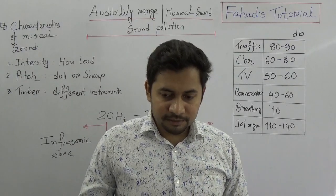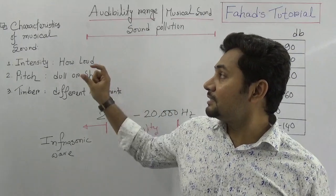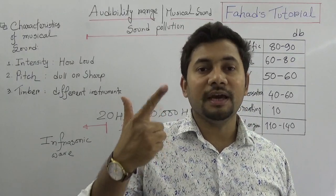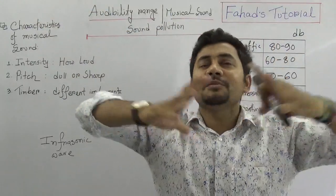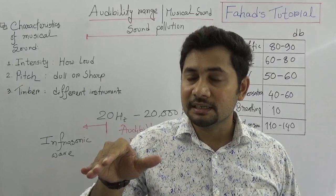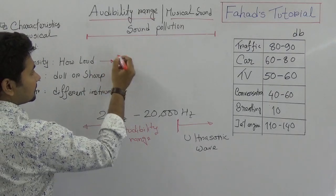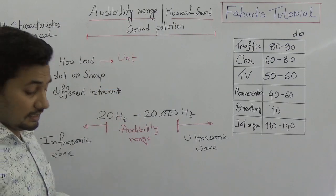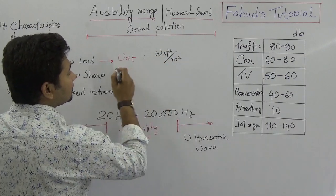Now think about what is musical sound. Musical sound is very scientific and technical. There are three characteristics of musical sound: intensity, pitch, and timbre. Intensity means how loudly a sound can be heard, or the amount of sound energy flowing per second per unit area. The unit of intensity is watt per meter square.